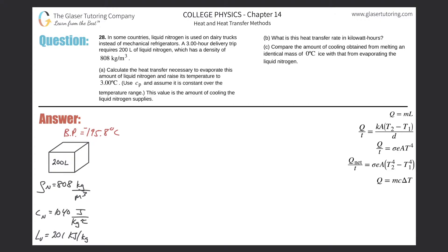Problem 28: In some countries, liquid nitrogen is used on dairy trucks instead of mechanical refrigerators. A three-hour delivery trip requires 200 liters of liquid nitrogen, which has a density of 808 kg/m³. Part a: calculate the heat transfer necessary to evaporate this amount of liquid nitrogen and raise its temperature to 3°C, using the given Cp value.